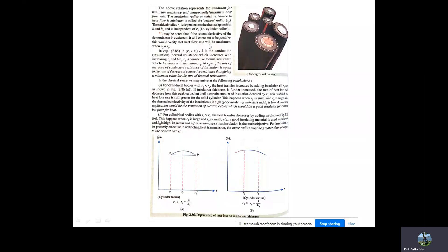This verifies that the heat flow rate will be maximum when r2 equals rc. The term ln(r2/r1)/k is the conductive thermal resistance, which increases with increasing r2. The term 1/(h0·r2) is the convective thermal resistance, which decreases with increasing r2. At r2 = rc, the rate of increase of conductive resistance equals the rate of decrease of convective thermal resistance, giving a minimum value for their sum.